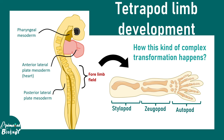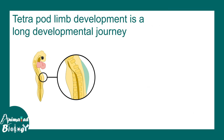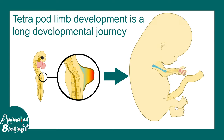This is a long journey. The question is how this kind of complex transformation really happens — from the set point to the end point. This forelimb field, which looks very simple, eventually bulges out to form a limb bud. That limb bud then extends, grows, creates bones, muscles, etc. underneath, to ultimately form the forelimb.